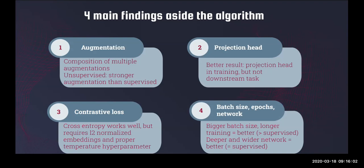The second main finding involves the projection head. The authors noticed they get better results when using the projection head during training for the contrastive task, but using the base encoder for downstream tasks leads to better performance. The third finding is about the performance of different loss functions used for the contrastive task, where they found NT-Xent gives the best performance, though it also requires a larger batch size.